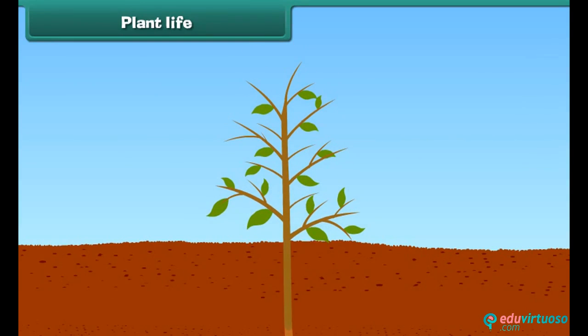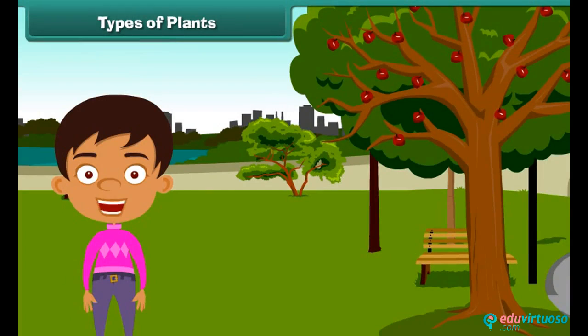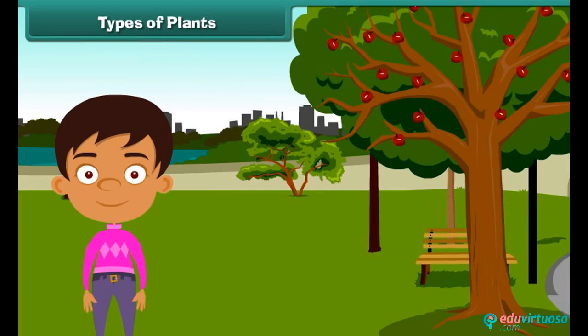Plants are also living like us — they need their own food and water to live and grow. They also have the ability to grow and become tall. We often see different types of plants around us; some plants are tall while some are small.